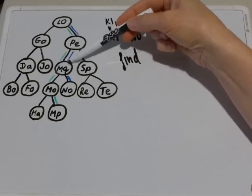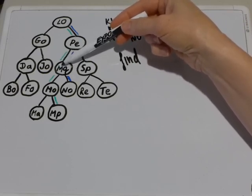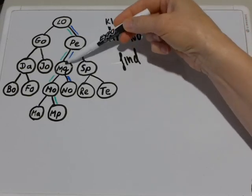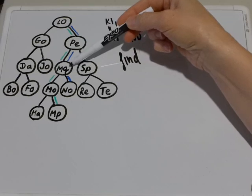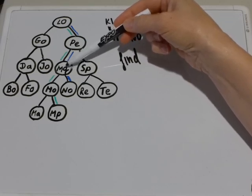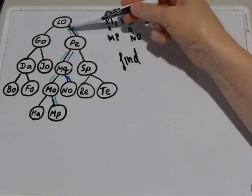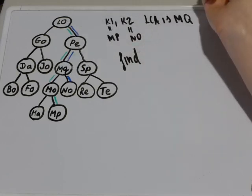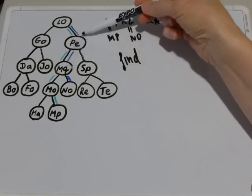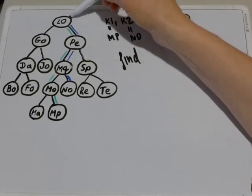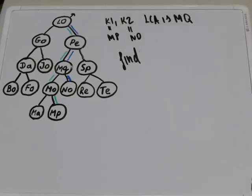At this point MP is less than MQ but K2 NO is greater than MQ. At this point we know that MQ is the lowest common ancestor. We can return this node up the chain of recursive calls and it will return MQ from our function.